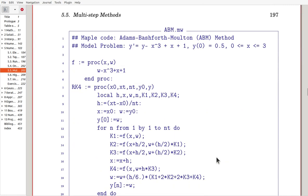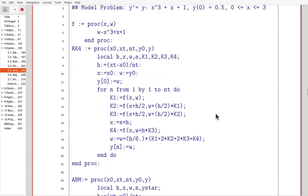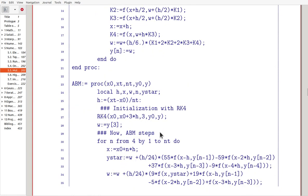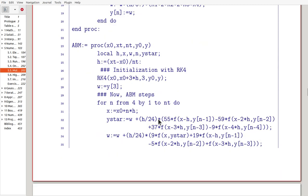We have ABM implementation for solving this problem, the model problem. f is defined here. RK4, the same algorithm we saw earlier. For ABM, we use RK4 for three steps, starting from x0 and x0 plus 3 times h, which means up to x3. Three steps we do, so this will include y0, the initialization, and y1, y2, y3.